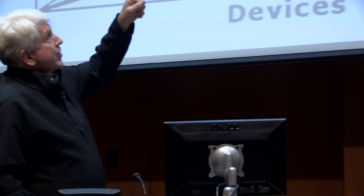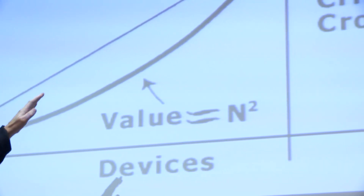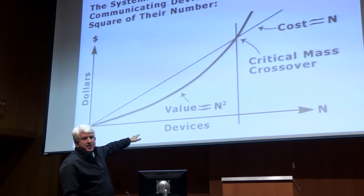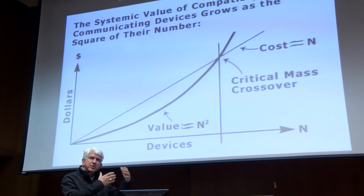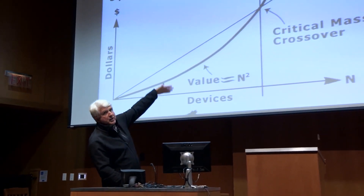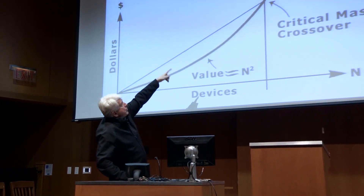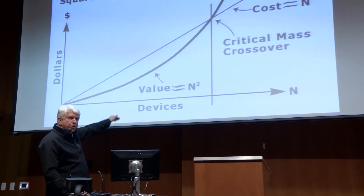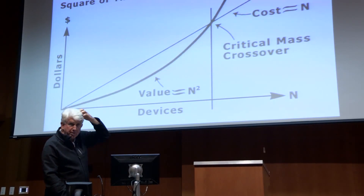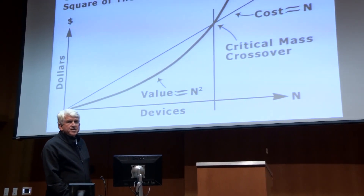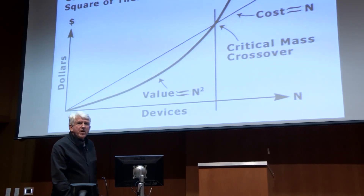I actually found a video of Robert Metcalfe himself explaining it. He argued that the cost of the network is linear in the number of nodes you buy, but the value of the network is based on the number of connections you can make — each node can connect to n minus one other nodes, so the value is n times n minus one, or approximately n squared. That quadratic eventually passes the linear, giving you a critical mass point. Fifteen years later, that concept was called Metcalfe's law: a network grows in value as the square of the number of its participants.